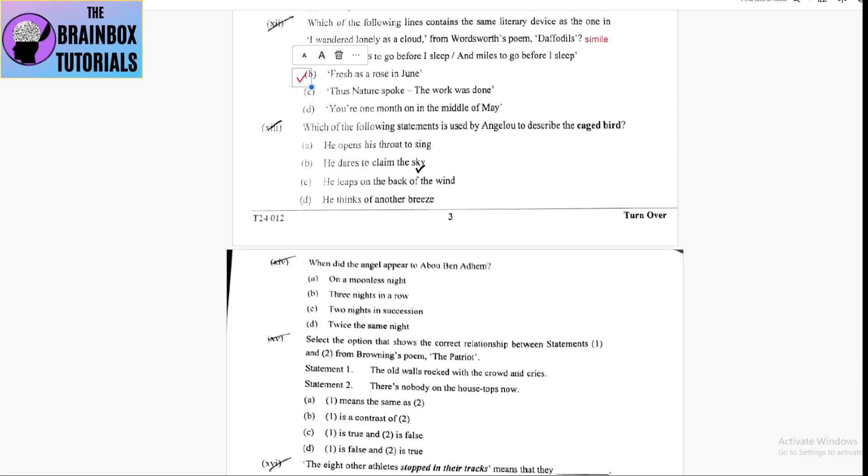Number B, he dares to claim the sky. This was for free bird. He leaps on the back of the wind. This is also for free bird. He thinks of another breeze. This is also for free bird. So, option number A is used for the caged bird.